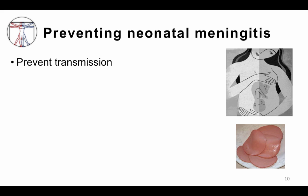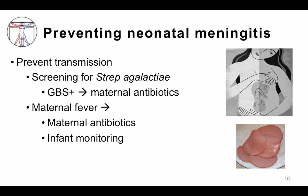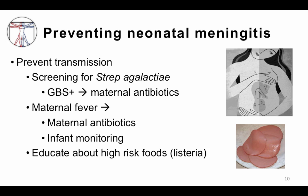To prevent neonatal meningitis, we screen pregnant women for group B strep and give peripartum antibiotics. Mothers with maternal fevers are at high risk for group B strep infection and also receive antibiotics. Infants are monitored closely, and if they show signs of infection, they receive empiric antibiotics. Women should also be educated about high-risk foods for Listeria, like cold cut meats, and be aware of outbreaks involving contaminated foods.